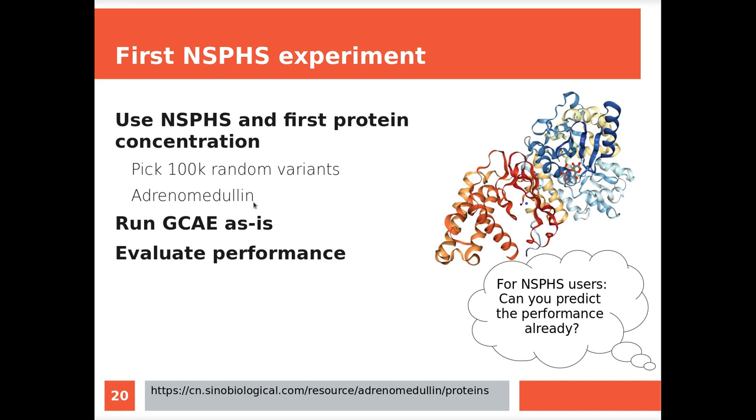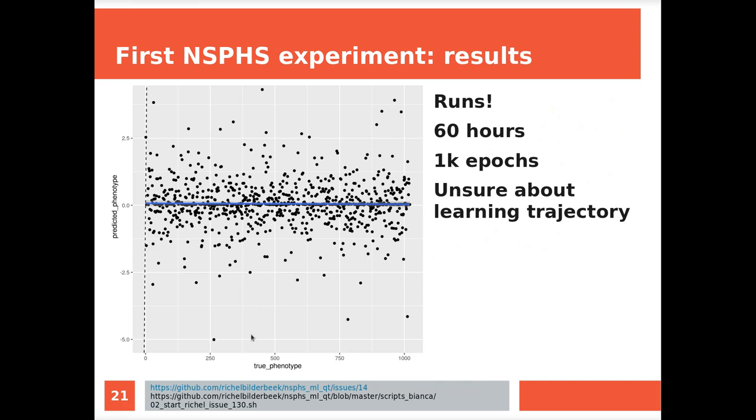So maybe if you know this dataset, or actually this is very general as well, can you predict the performance already? So we used 100,000 random SNPs and we used adrenomedulin. Well, I'll show you now how the performance looks like. Here we have the true phenotype, at the y-axis we have the predicted phenotype, and ideally the identity line should be diagonal and all the points should lie on it. Instead, the identity line goes up close to vertically, and you see that the prediction is completely bad. So it does run, that's good. It took 60 hours to run.